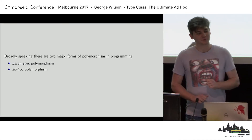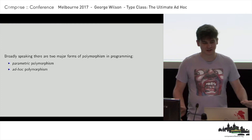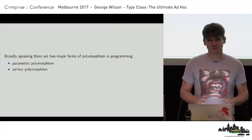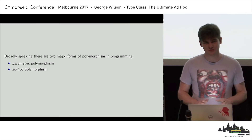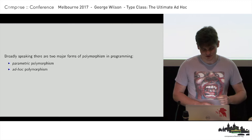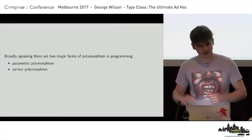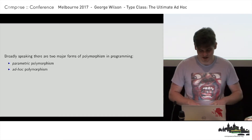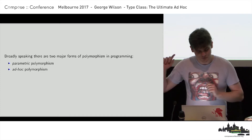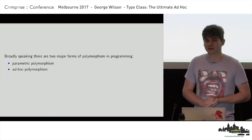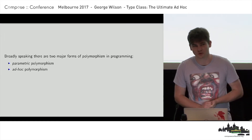Broadly speaking, there are two major forms of polymorphism used in programming. People will argue with me about this, but I said broadly and I said major, so hopefully that weasels it out enough. Parametric polymorphism and ad hoc polymorphism.